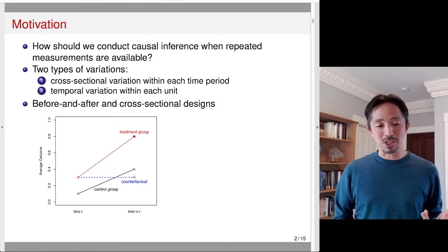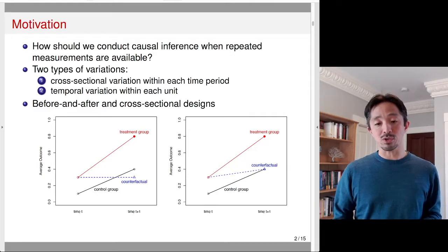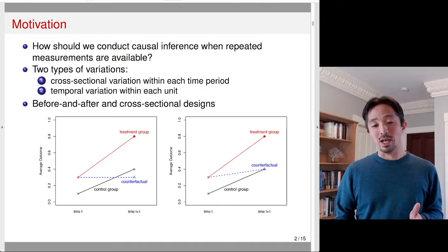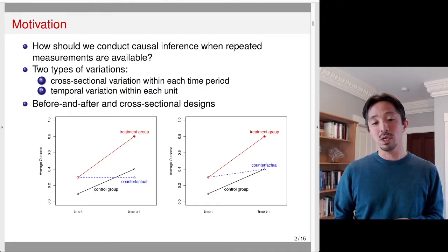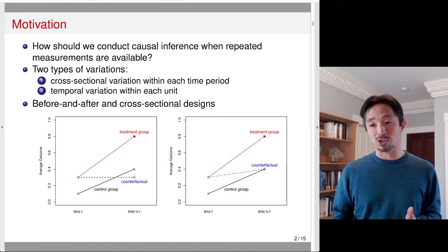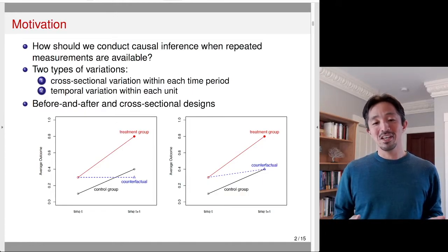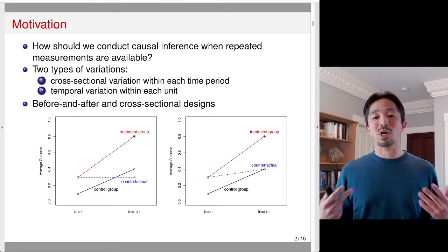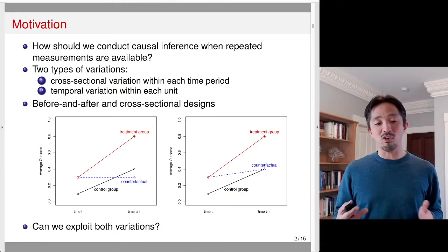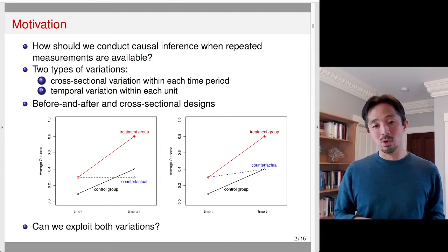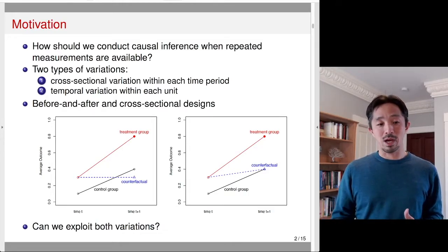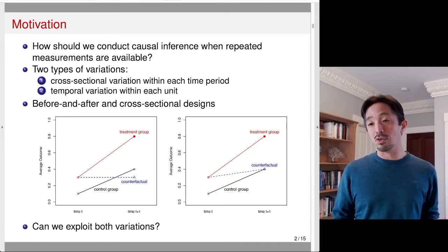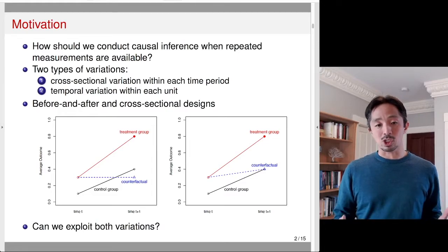This approach is not exploiting all available information because it ignores the control group. Conversely, the cross-sectional design completely ignores the pre-treatment period and focuses only on time t+1, where the treatment group receives treatment and the control group does not. We use the control group outcome as an estimate for the treatment group, but this throws away the pre-treatment information. The motivation for difference-in-differences is to exploit both types of variation.